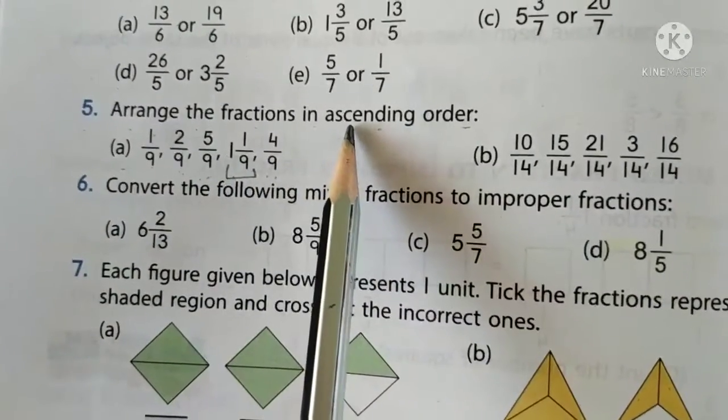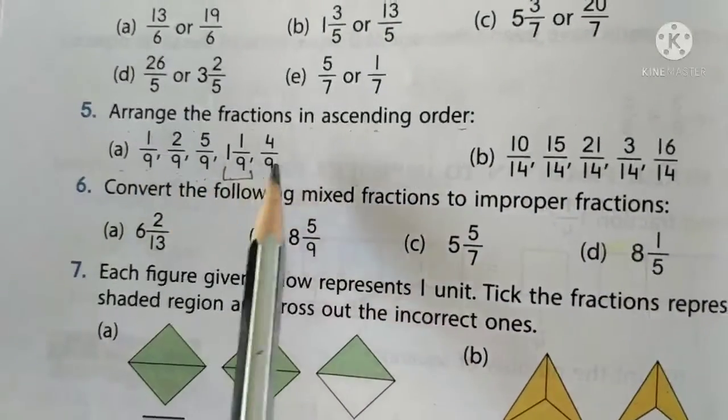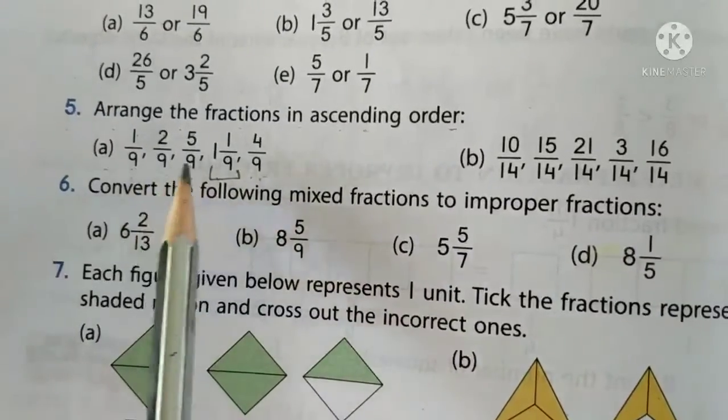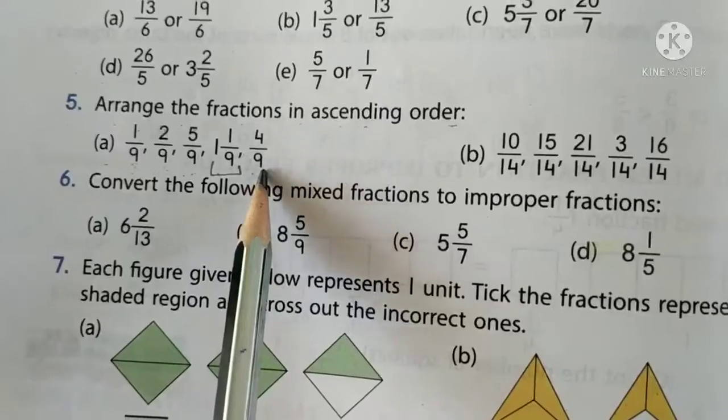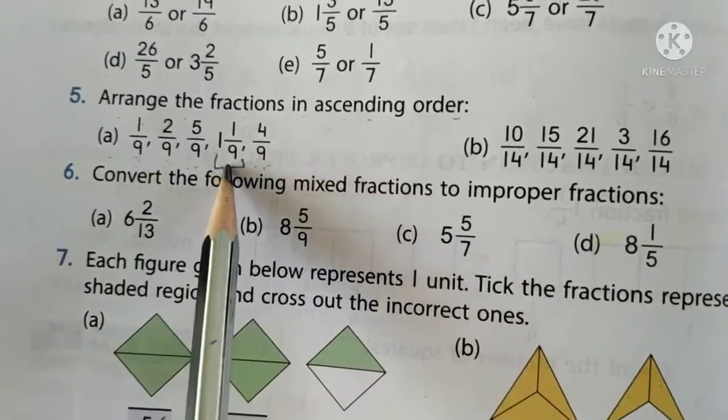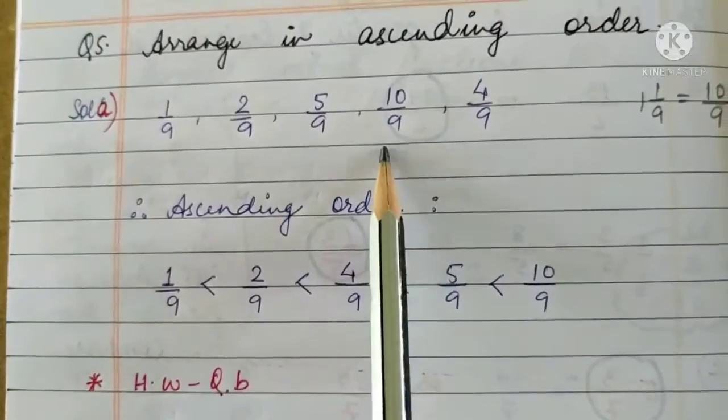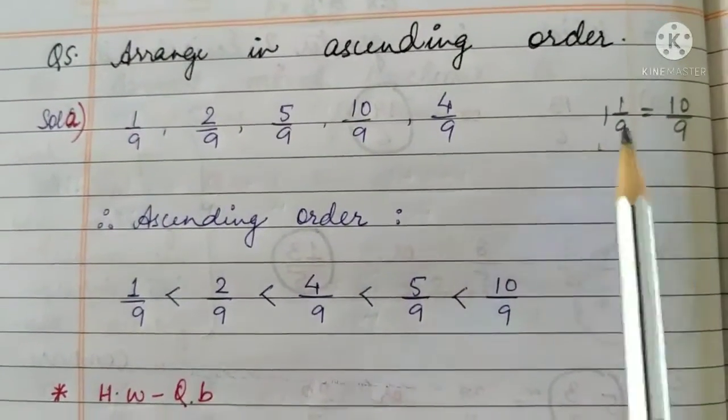Because when we have to arrange these into ascending order, that means we have to first compare the fractions. So for comparison, all the fractions have to be alike. So we will change this mixed fraction into an improper fraction first.